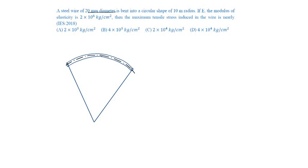When a steel wire of 20 mm diameter is bent into a circular shape of radius 10 meters, R is given as 10 meters.